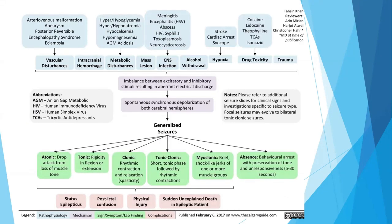Regarding generalized seizure etiology and pathophysiology: vascular disturbances like arteriovenous malformation, aneurysm, posterior reversible encephalopathy syndrome, or eclampsia; metabolic disturbances such as hyper- or hypoglycemia, hyponatremia, or hypocalcemia; mass lesions; CNS infections like meningitis, encephalitis, or HIV; alcohol withdrawal; stroke or cardiac arrest causing hypoxia; drug toxicity like cocaine and lidocaine; and trauma can all lead to an imbalance between excitatory and inhibitory stimuli, resulting in aberrant electrical discharge. This spontaneous synchronous depolarization of both cerebral hemispheres can cause generalized seizures.